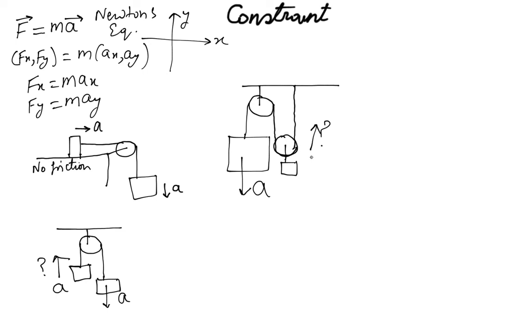But the answer is a over 2. How? Well, let's think about it. If this guy goes down by length x, then this string has an increase in length of x. So this guy has gone down by x, so the length of the string on the left-hand side has gone up by distance x.